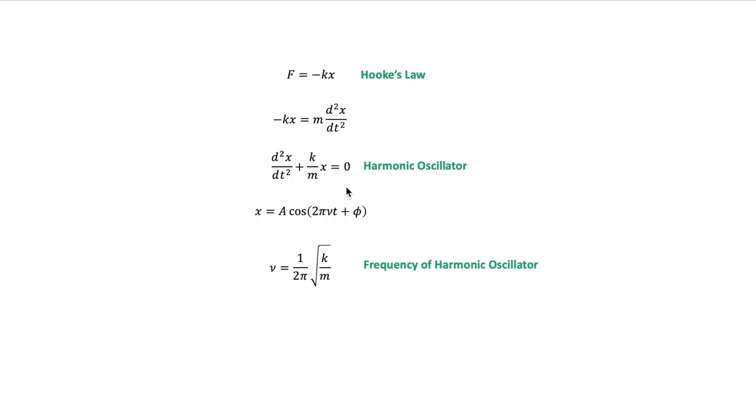The common solution is x = A cos(2πνt + φ) and ν = 1/(2π)√(k/m) is the frequency of the harmonic oscillator and A is the amplitude.